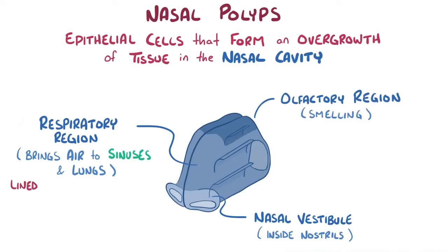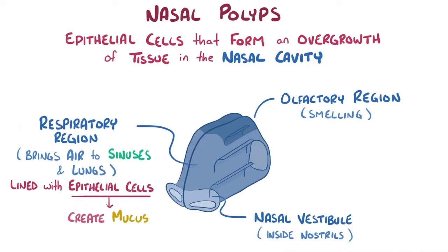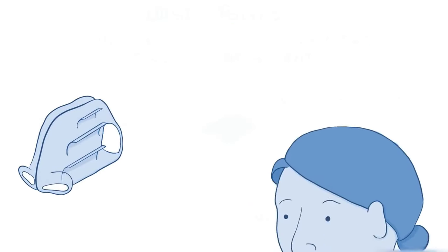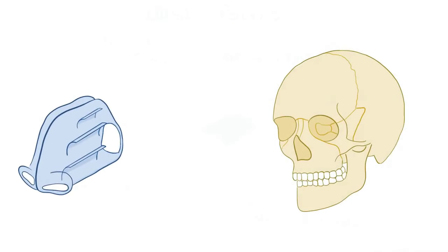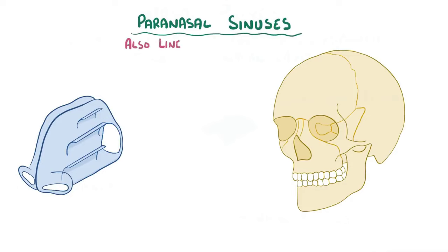Lining the respiratory region are epithelial cells that create mucus to moisten the air and trap pathogens. There are also air-filled spaces within the skull on either side of the nose called paranasal sinuses, and these are lined by the same layer of epithelial cells as the respiratory region.